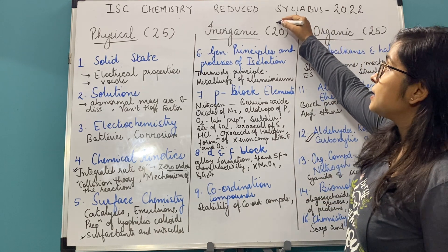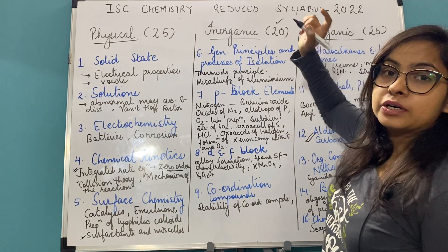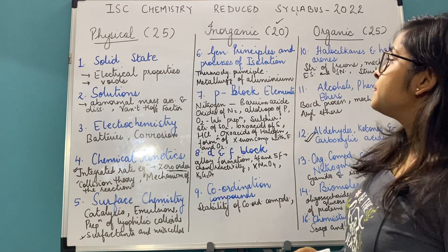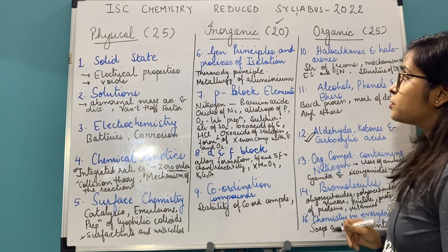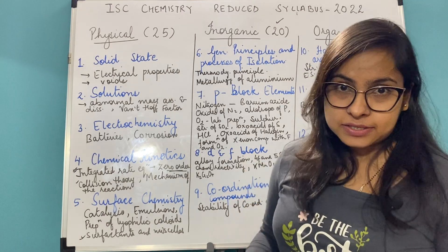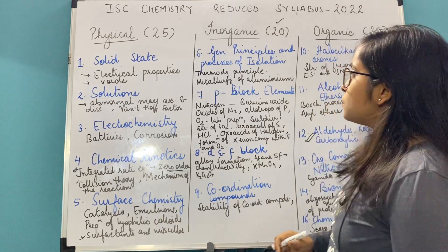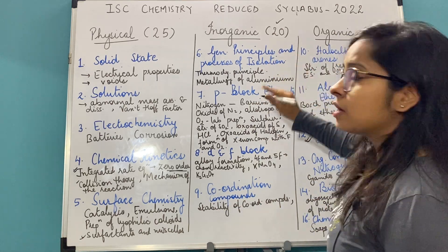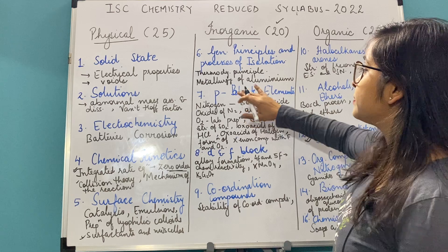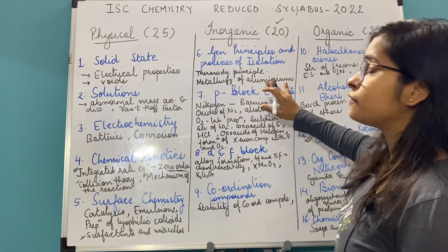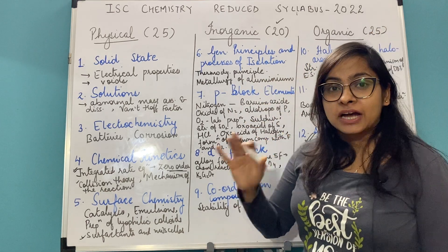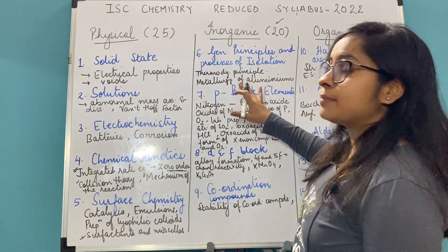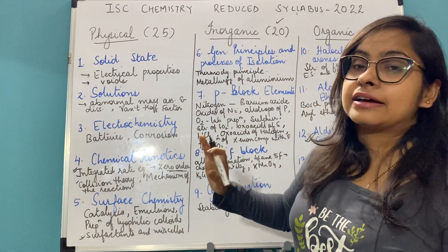Coming to Inorganic Chemistry, which carries 20 marks. The first chapter is General Principles and Processes of Isolation of Elements. From that, the thermodynamic principle has been removed. Also, metallurgy of aluminium has been removed from the five metals — so aluminium is removed, keep that in mind.